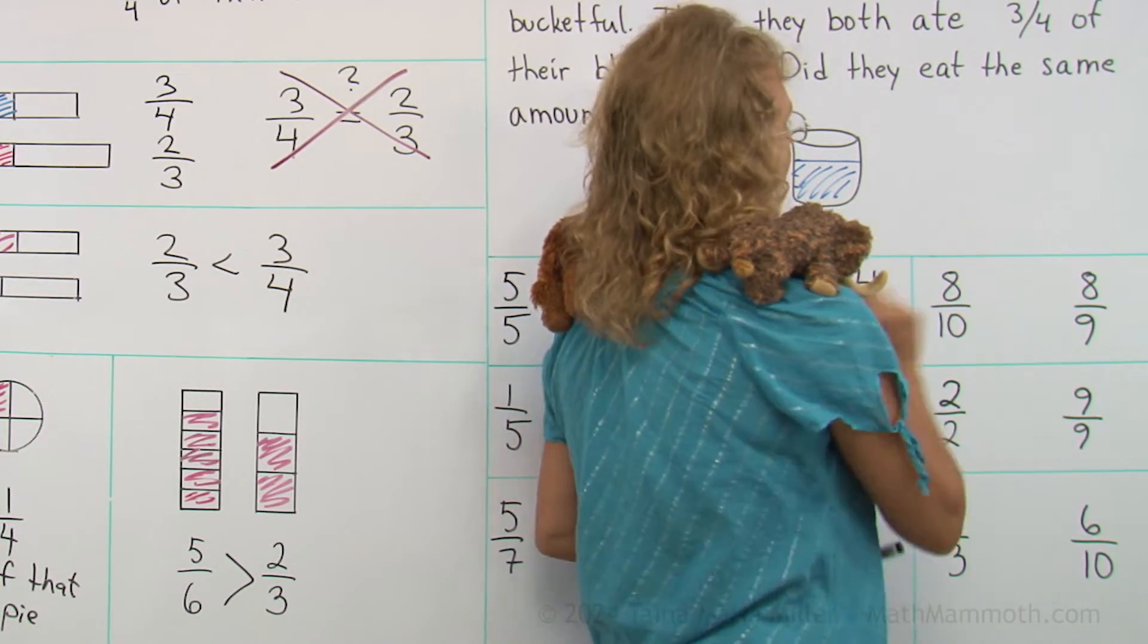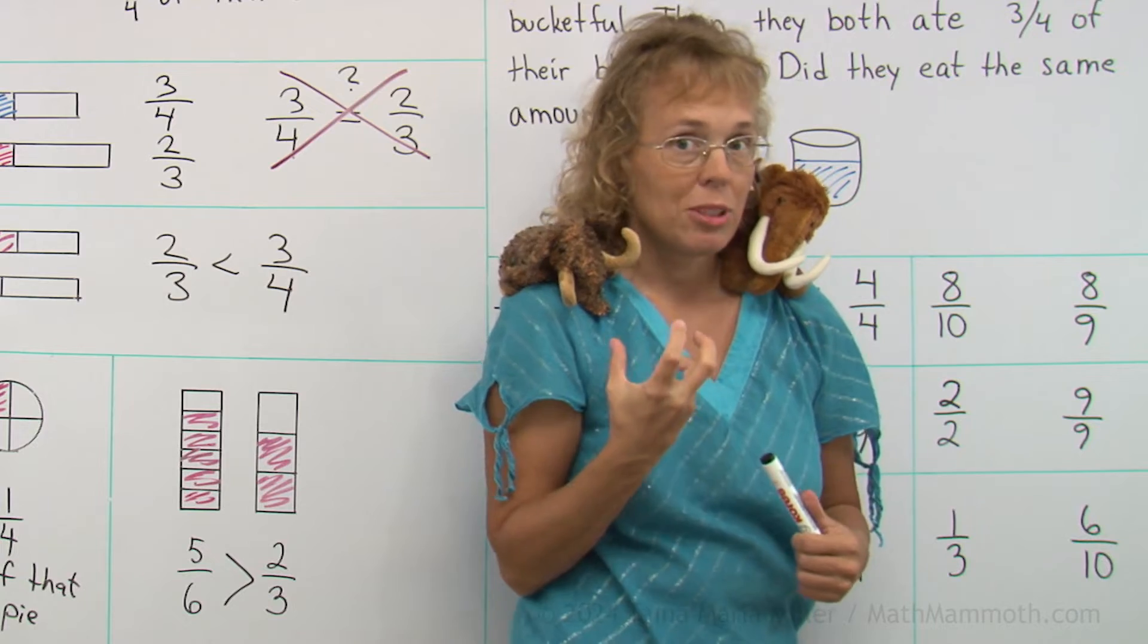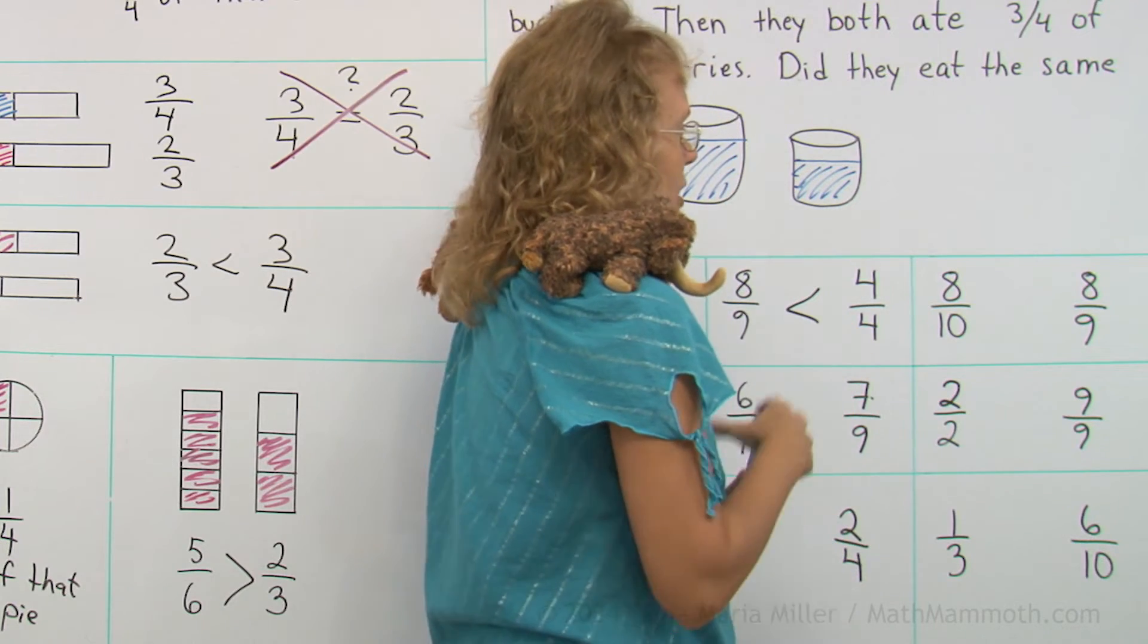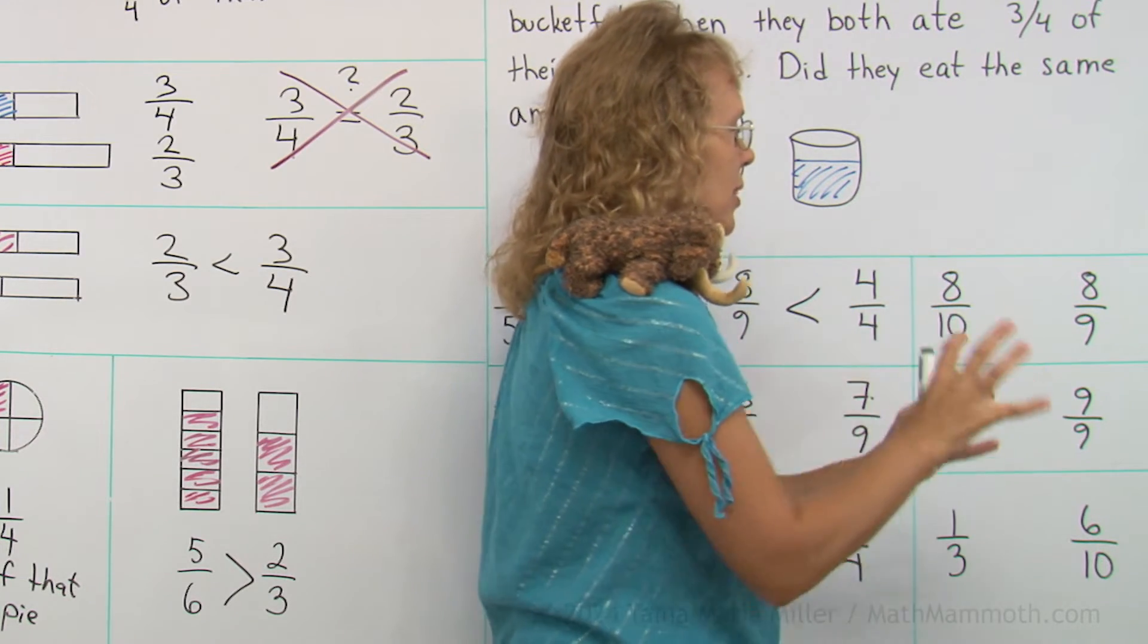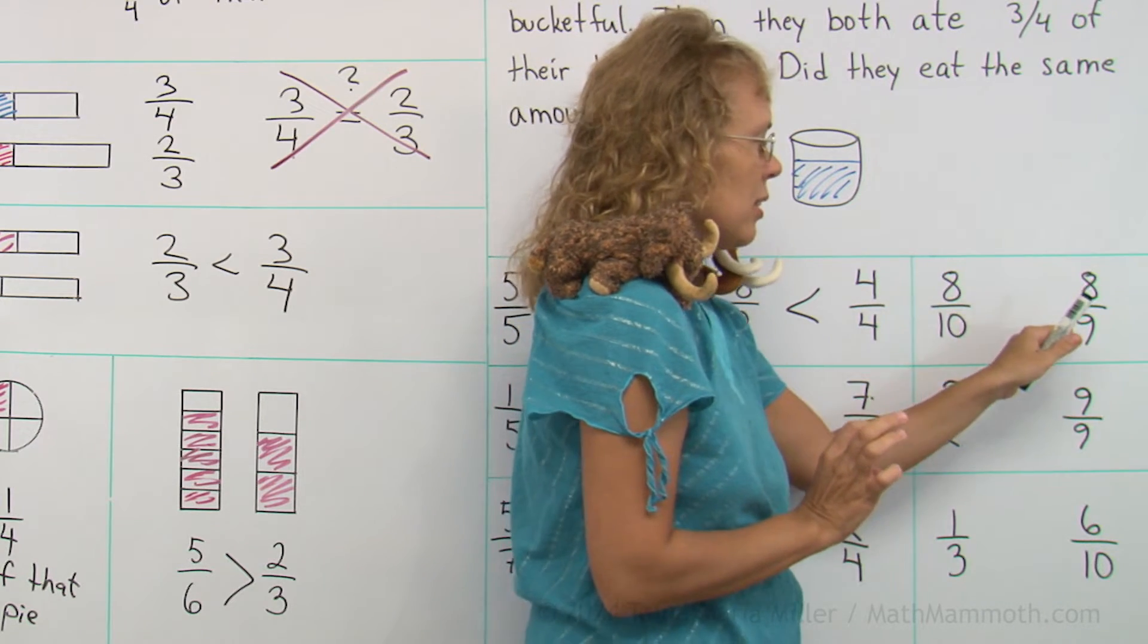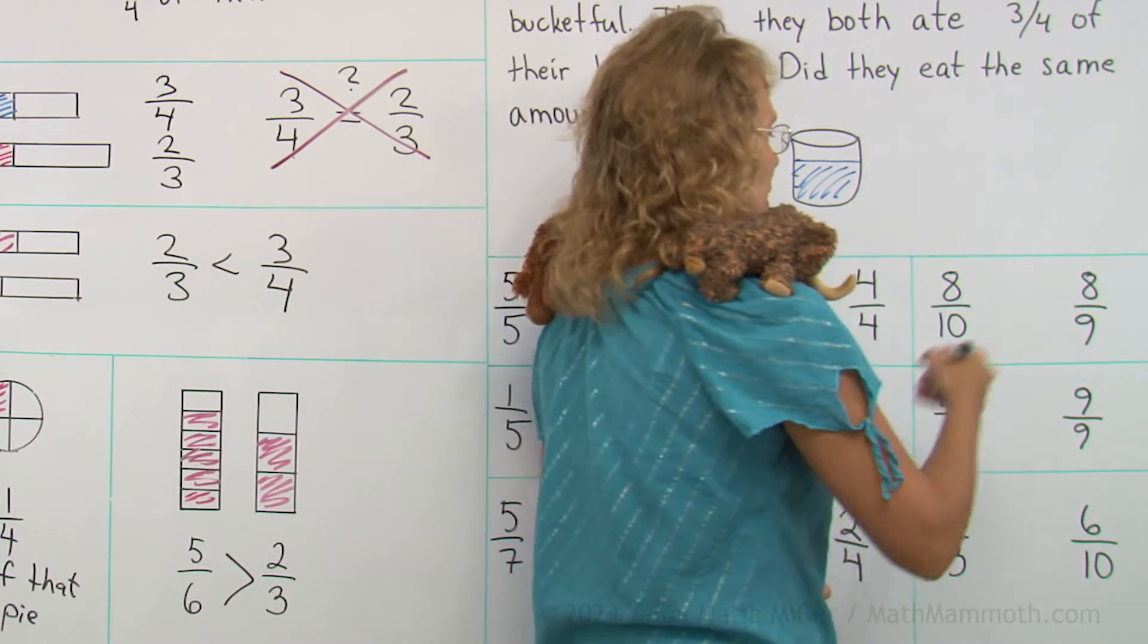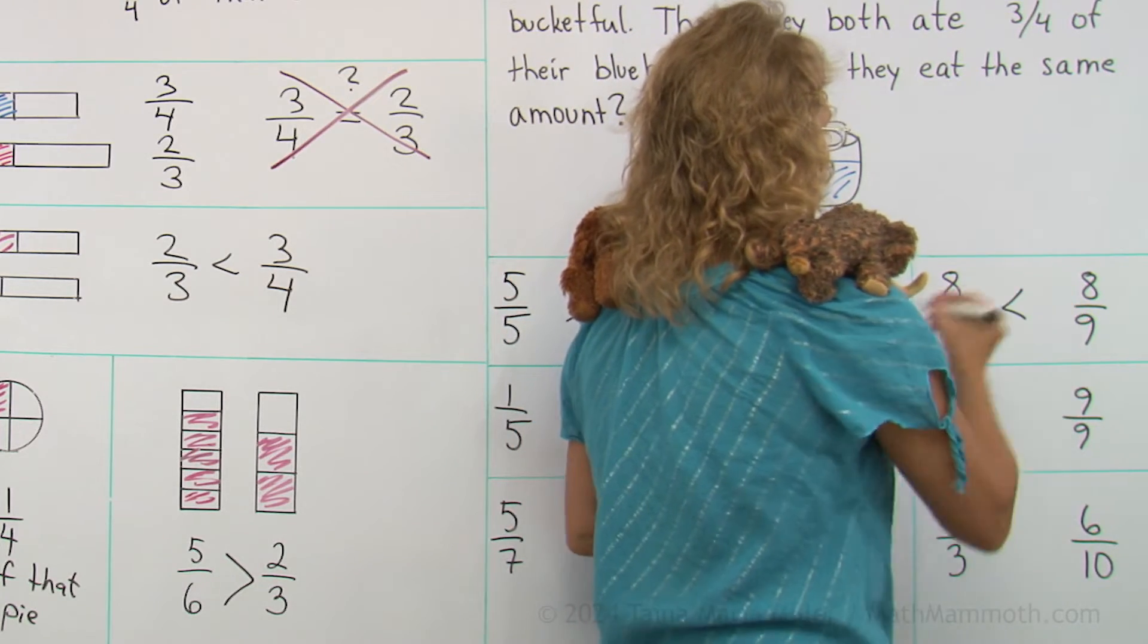Eight-tenths and eight-ninths. Notice there's eight and eight, the same number. The top numbers are the same. So there's the same amount of pieces, you have eight pieces and eight pieces. But are tenths smaller pieces or ninths? Tenths are smaller pieces, so eight-tenths is less than eight-ninths.